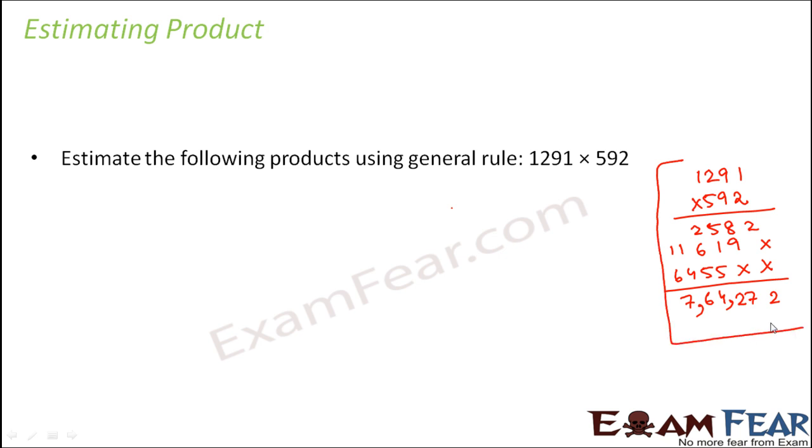So this is the accurate product that you get, which is 764,272. So now when we estimate these two numbers and find the product, let's see what do we get.